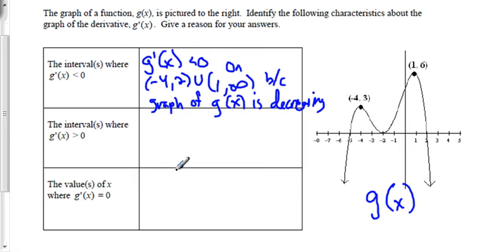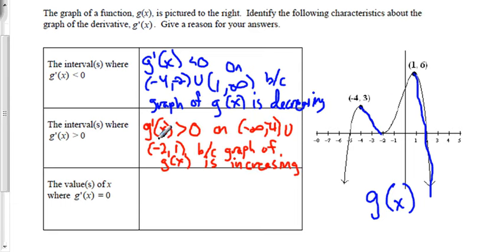g'(x) is less than zero on the interval from -4 to -2, and again from 1 to positive infinity — those are where g(x) is decreasing. g'(x) is greater than zero on the interval from negative infinity to -4, union the interval from -2 to 1. Parentheses are used because we don't include -4, -2, or 1, and we always use parentheses at infinity.